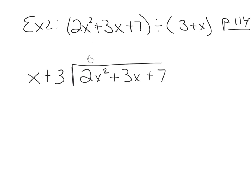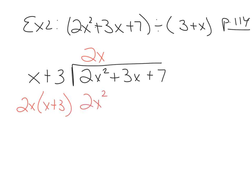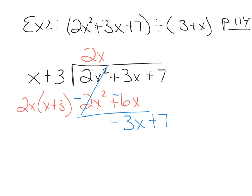x times what makes 2x squared? That would be x times 2x. Take that term, multiply times your divisor, and write it underneath — distributing gives us 2x squared plus 6x. When you get ready to subtract, you change the signs of these terms, so they are both negatives now. The first term should always cancel — make sure they are opposite signs, because I've seen students forget to change the signs, and that gives you a problem. When I add these, I get negative 3x. Then I bring down plus 7 and do the whole thing again.